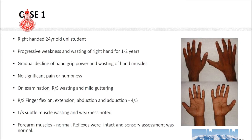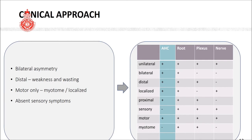Where could the lesion be? Summarizing the clinical features: it is a bilateral asymmetric problem with weakness and wasting involving distal muscle groups of the hand. It is motor only — either myotomal or localized — with absent sensory symptoms or signs. If you look at the clinical tool formulated earlier, the only category without sensory symptoms or signs is anterior horn cell. So using this simplified tool, we can categorize it as anterior horn cell pathology.